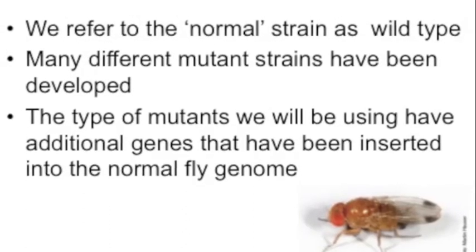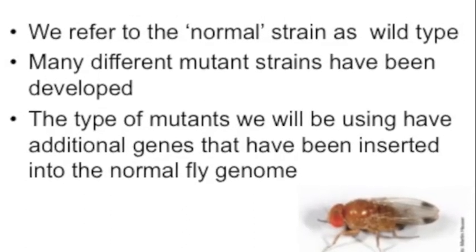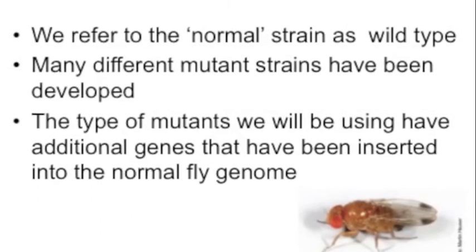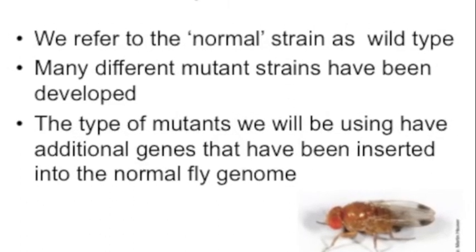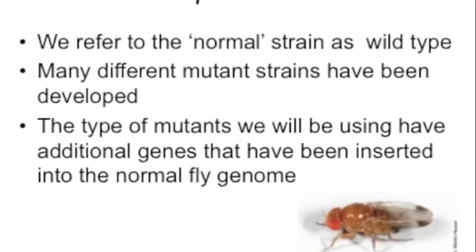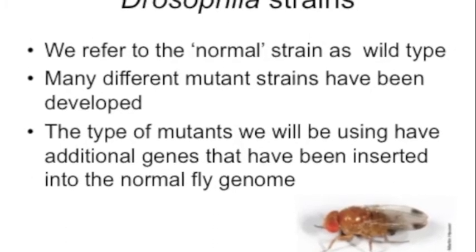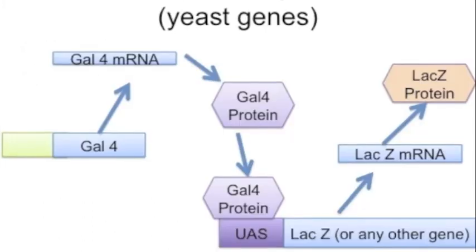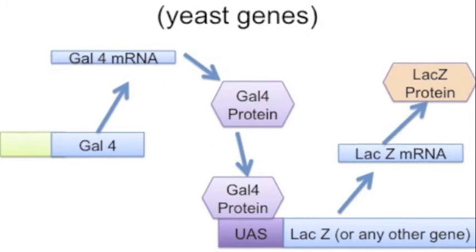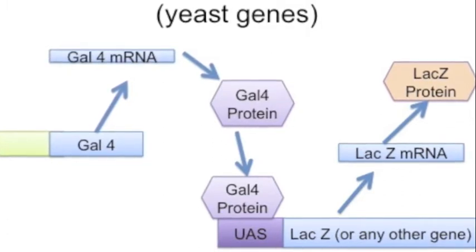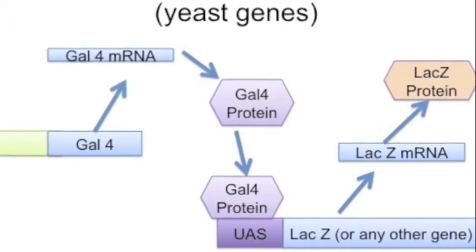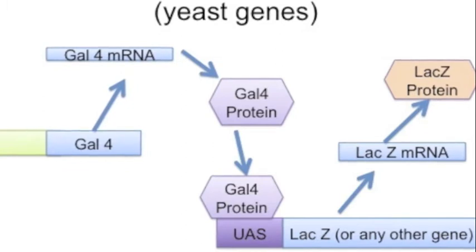Many different strains of Drosophila have been developed. Some have been genetically modified to contain additional genes, and this is what we will be using — two different strains with additional genes. In this particular system we will use genes that have been discovered in yeast. Gal4 is a protein that can bind to the promoter UAS and drive genes.